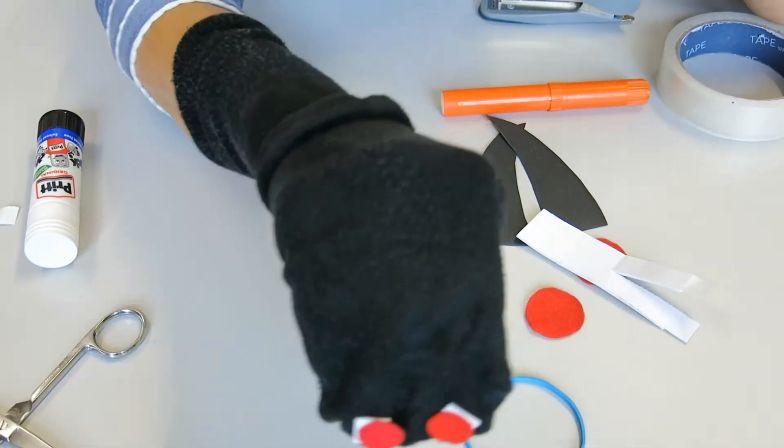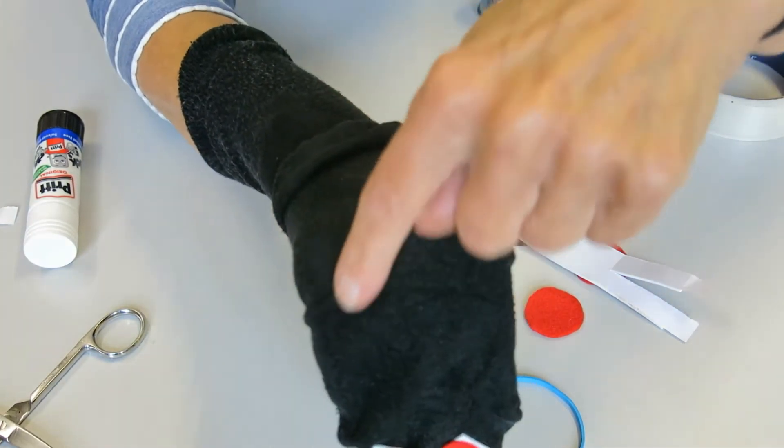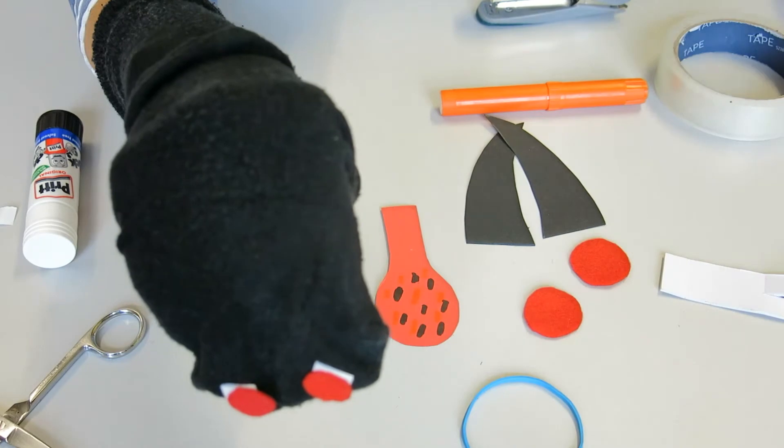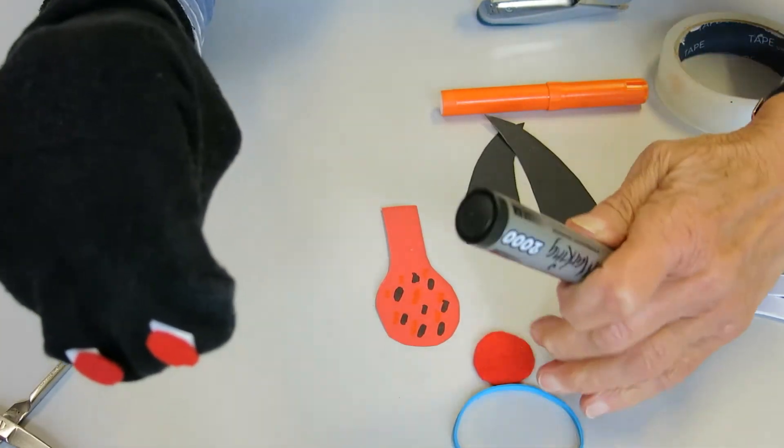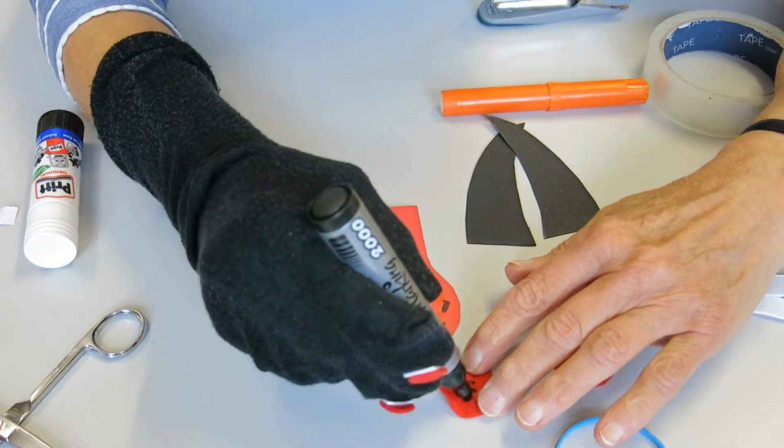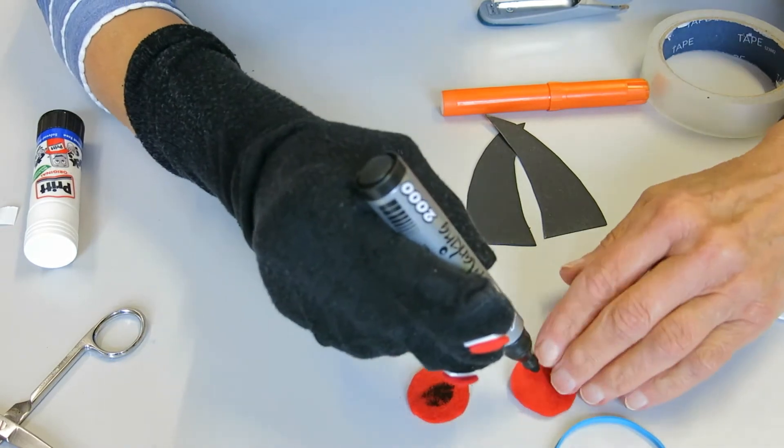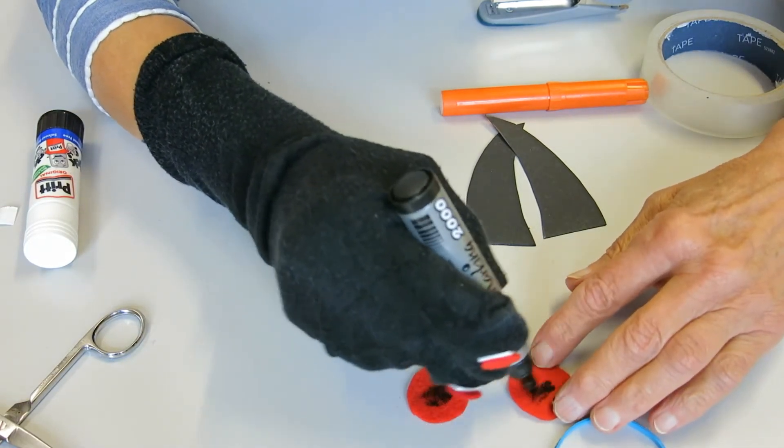Now you need to think about where his eyes come. He's got eyes almost on the side of his head. To make your circles look a little bit more like eyes, you need to give them some black middles. I'm just drawing on with a felt tip. There we go.